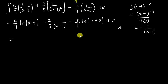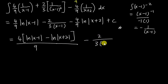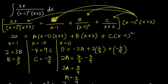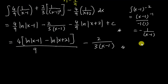For a neater final answer, I group the logarithm terms: (4/9)[ln|x-1| - ln|x+2|] - 2/(3(x-1)) + C. I hope this video helped you understand partial fractions — I find this substitution method is much faster. Once you have A, B, and C, you just need to know how to integrate these basic terms. See you in the next video!